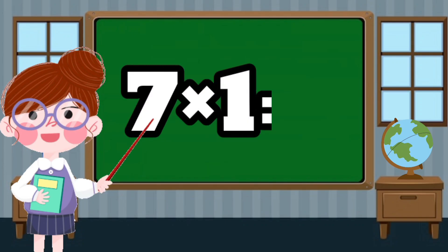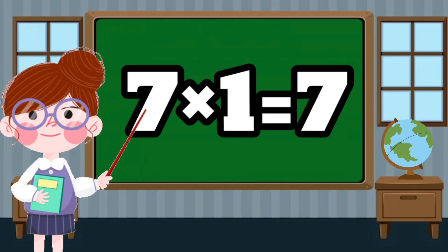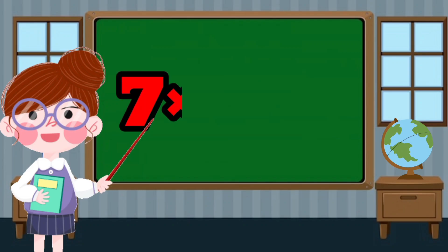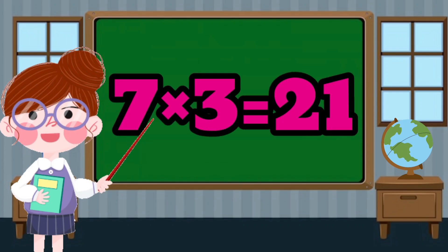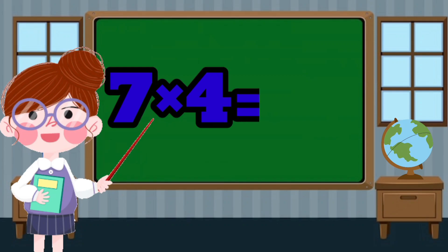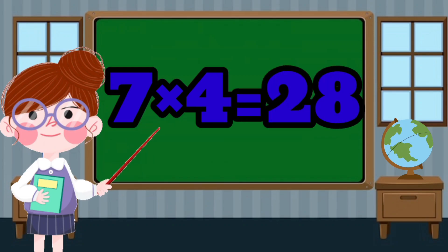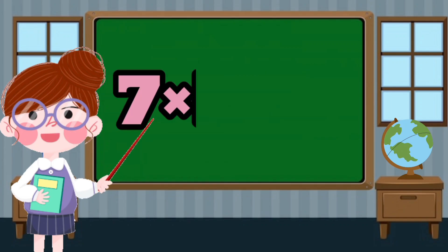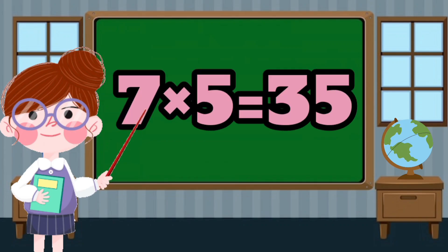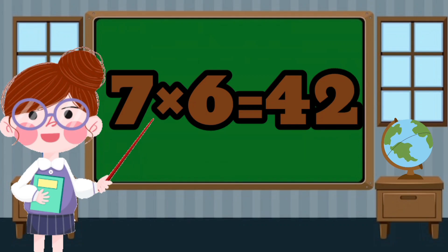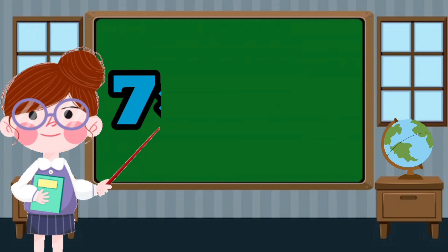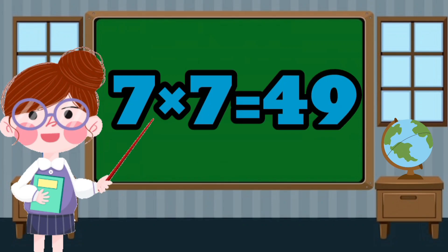7 x 1 equals 7. 7 x 2 equals 14. 7 x 4 equals 28. 7 x 5 equals 35. 7 x 6 equals 42.